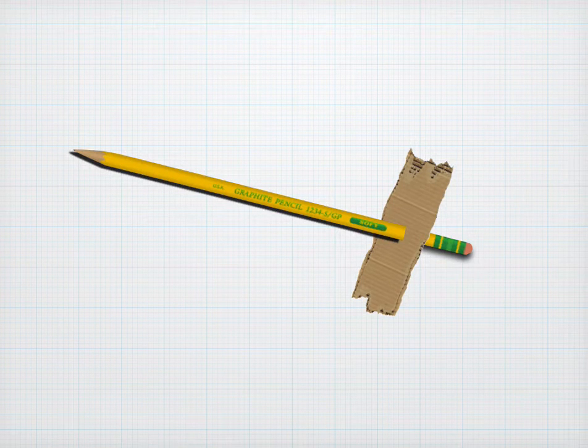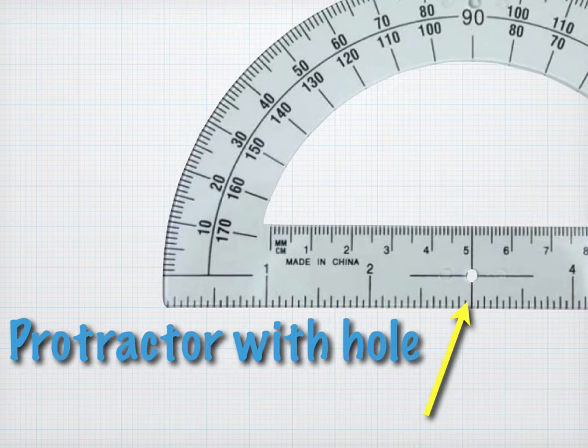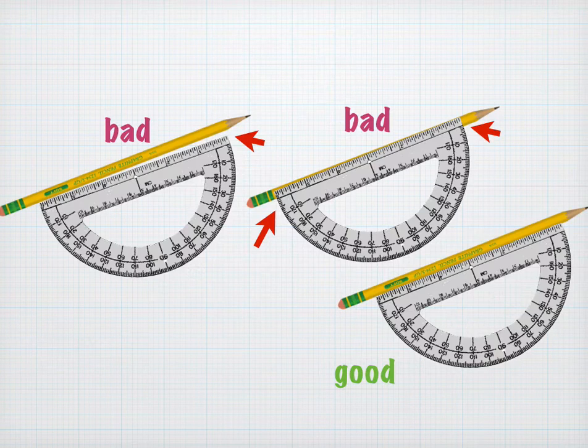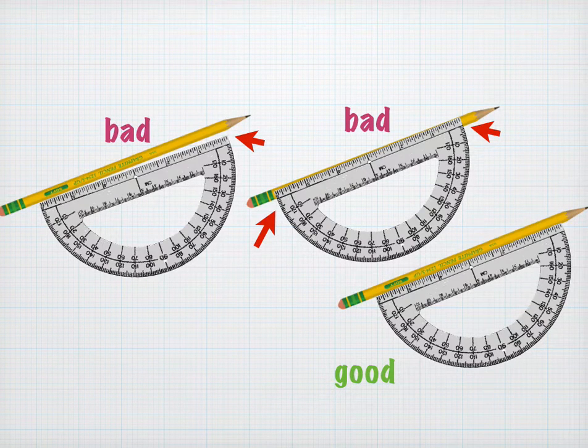So we're going to start by stabbing the pencil through a scrap of cardboard. Then you're going to take your protractor, preferably one with a hole, and you're going to tape it onto the edge of the pencil. And the alignment really needs to be perfect.